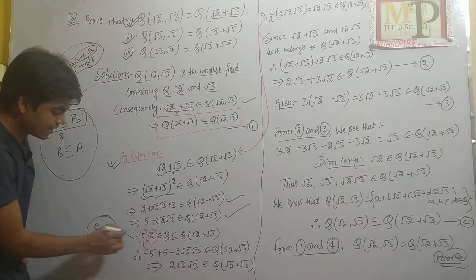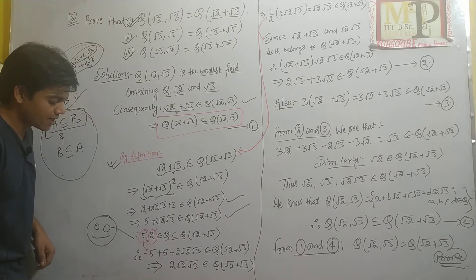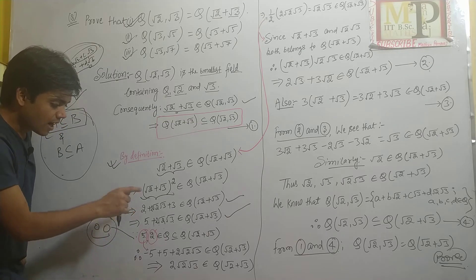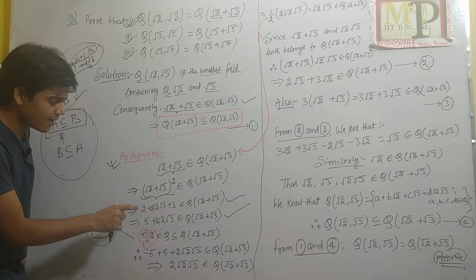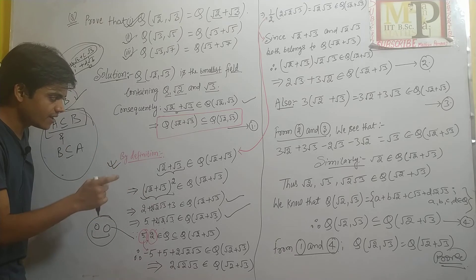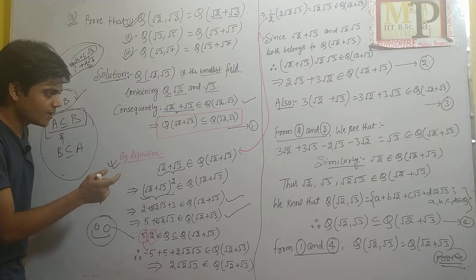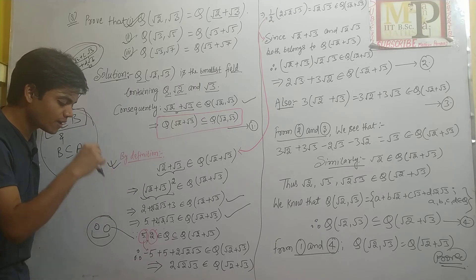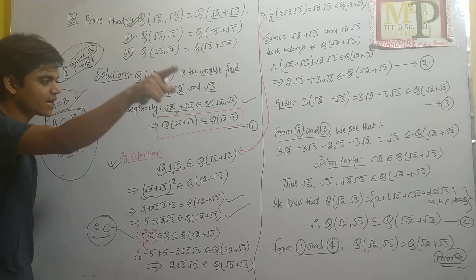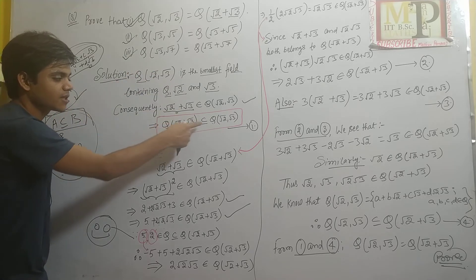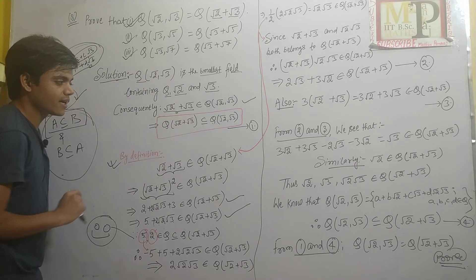अब दिमाग लगाना है — finally हमें Q(√2, √3) को Q(√2 + √3) के अंदर दिखाना है, यानी इसका उल्टा दिखाना है — Q(√2, √3) ⊆ Q(√2 + √3).